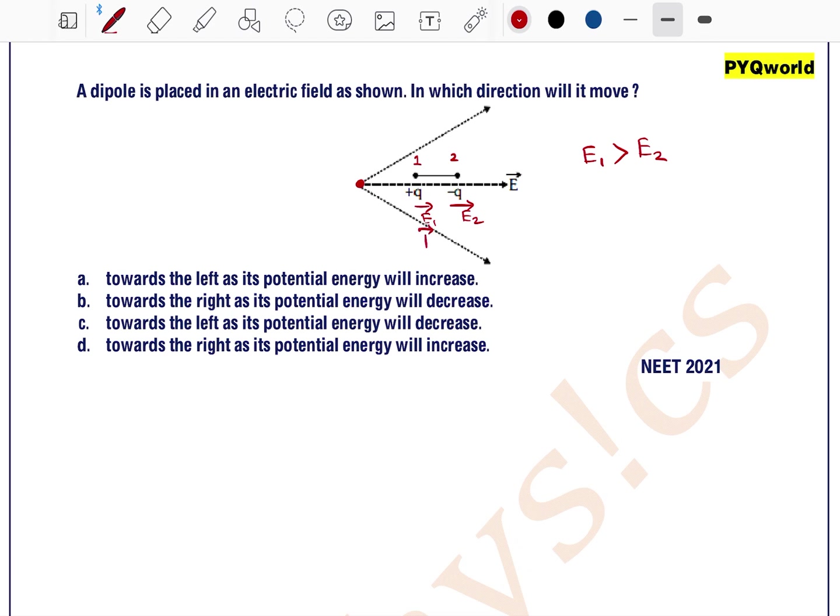The negative charge will move opposite to the direction of electric field, so it will move in the direction F2. As we know, F is equal to Q into E. Since E1 is greater than E2, we can say F1 is greater than F2, so the net force will be in the direction of greater force, that is F1.